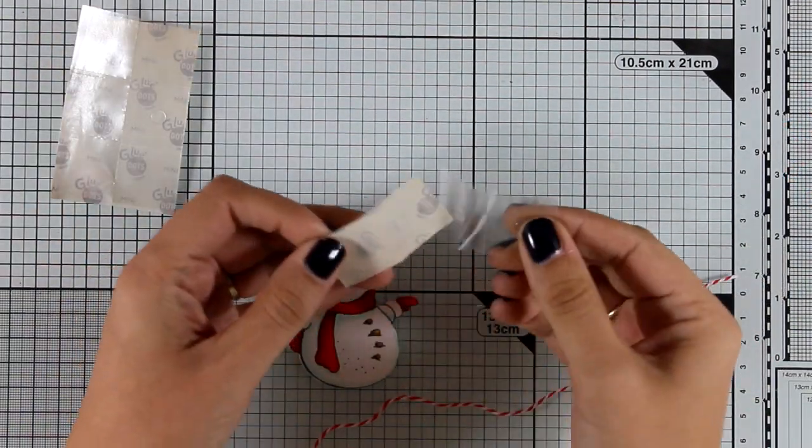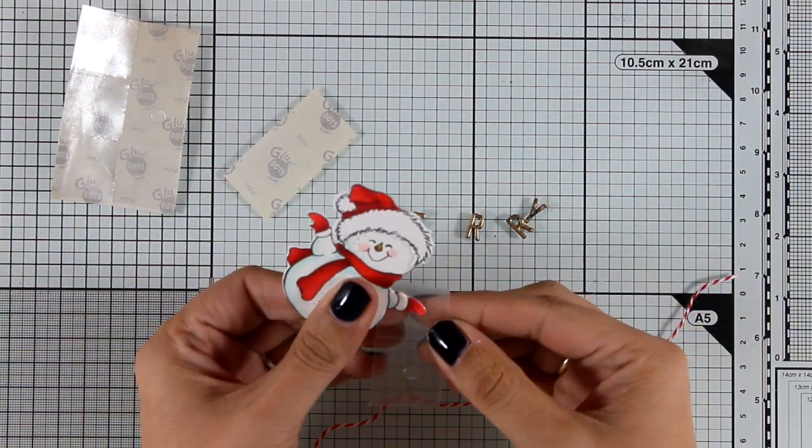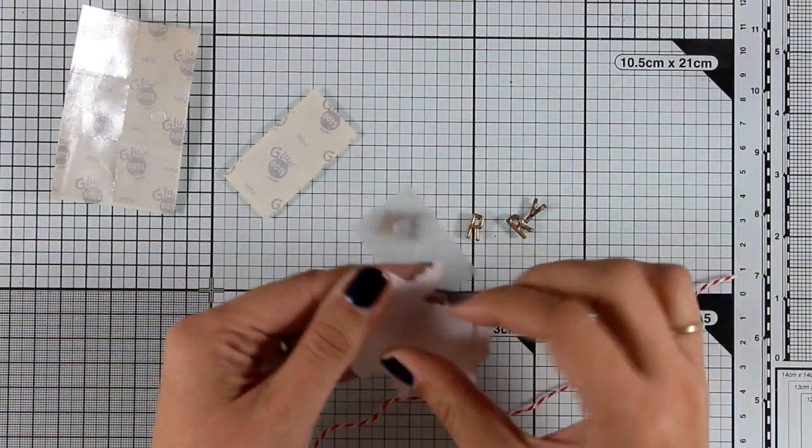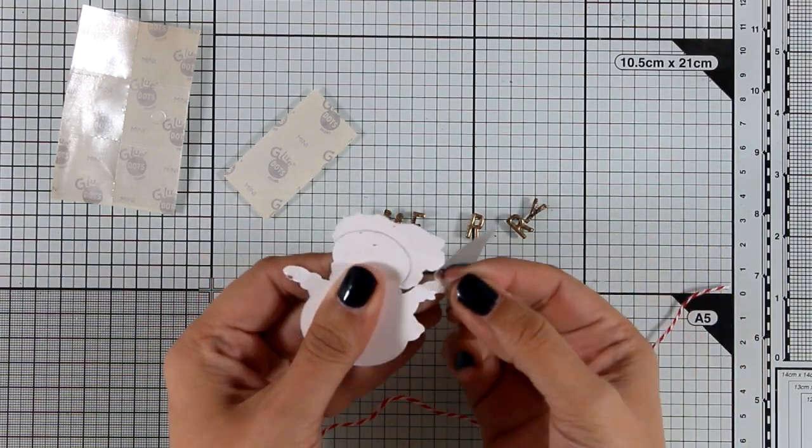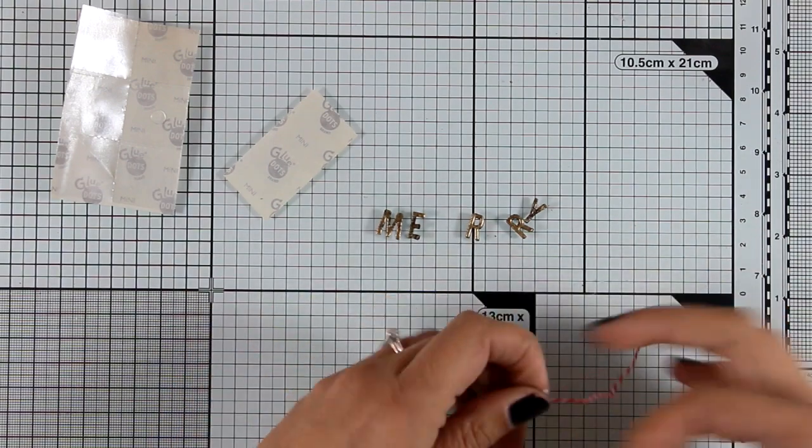For my garland, I'm using a piece of baker's twine in white and red. I'm also adding some glue dots at the back of his hands, and this way I can secure the baker's twine as if my snowman is holding it.